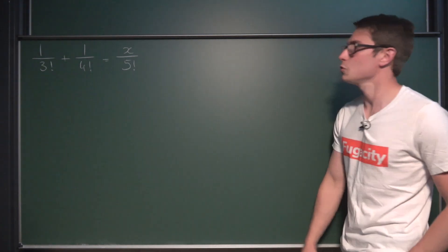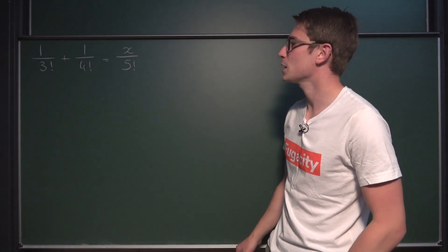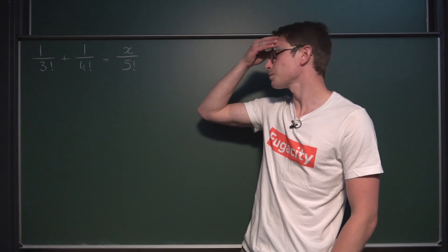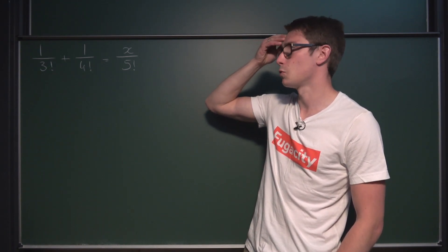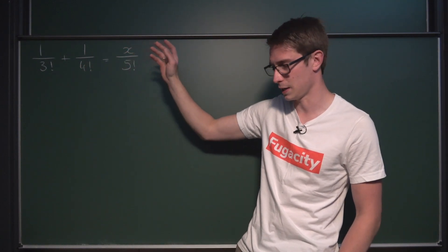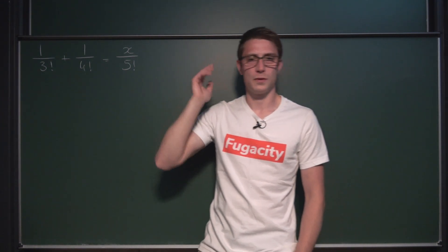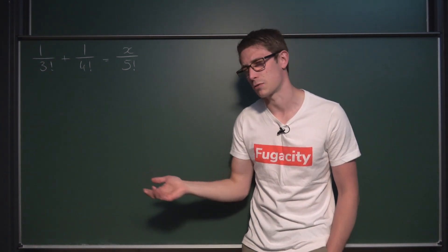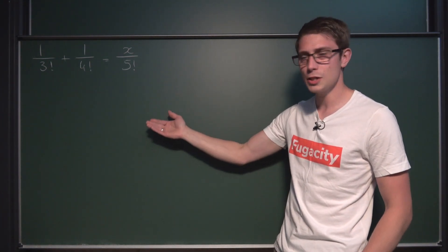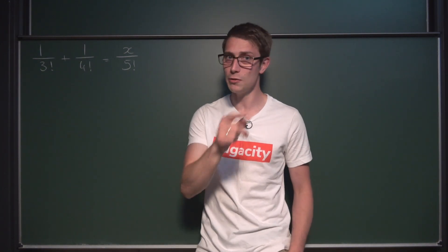We are going to take a look at this equation today: 1 divided by 3 factorial plus 1 divided by 4 factorial is equal to x divided by 5 factorial. A similar question with 4!, 5!, and 6! really doesn't matter — you'll see during the video. It was recommended to me on Facebook, from a mathematics group. I thought it was a funny question and we're going to solve it first, then look at the generalization. Can you figure out the x?